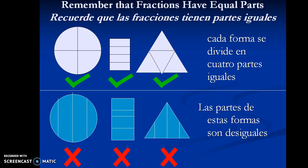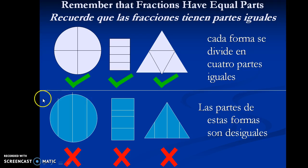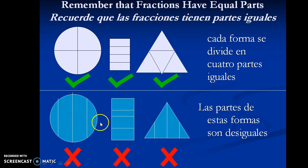It's also important to remember that fractions are made up of equal parts. Each shape in this upper section is divided into equal parts. So, one piece of this is one fourth. One piece of this is one fourth. And one piece of this is one fourth. These shapes down here are also divided into four parts, but these parts are clearly not equal. And because of this, the fractions are not going to be accurate if we were to say that this piece right here is one fourth.